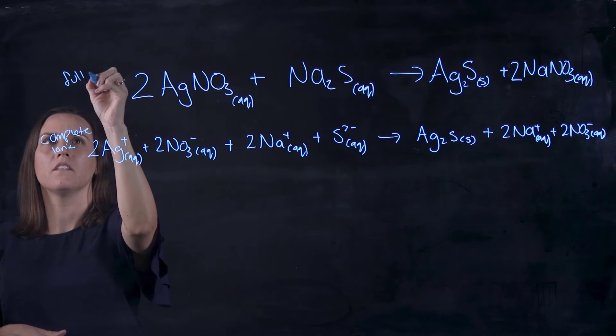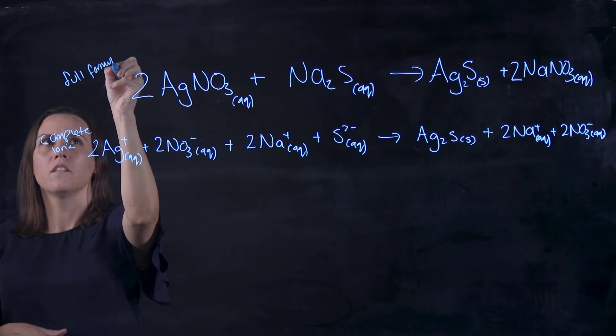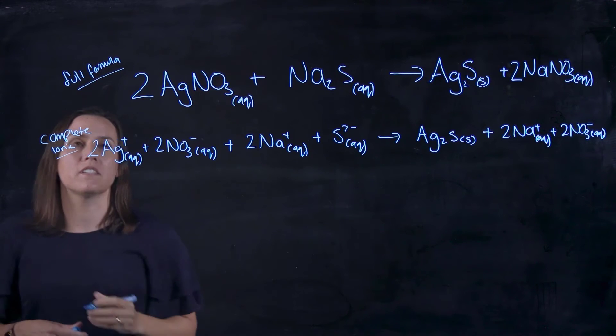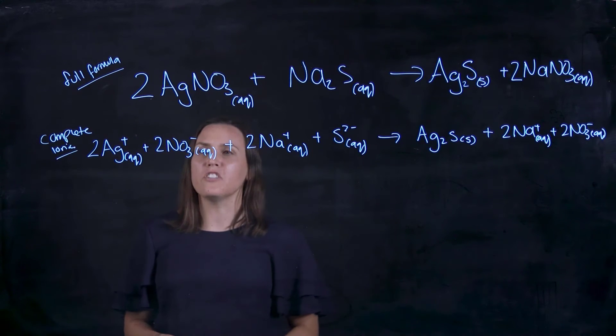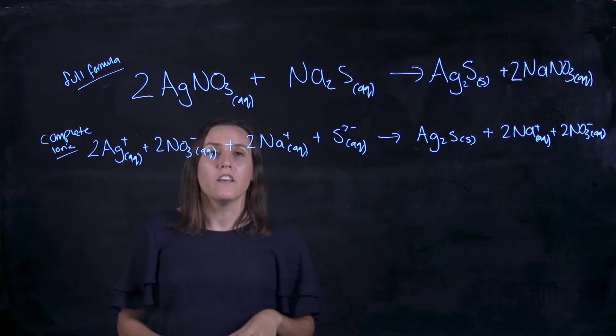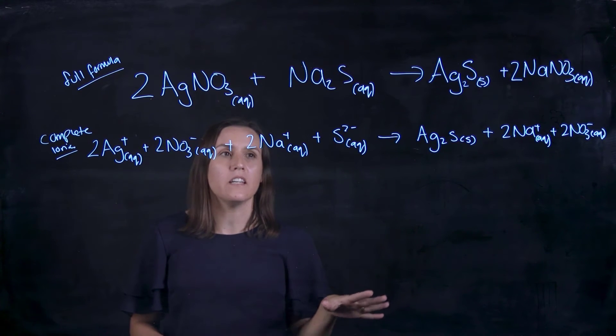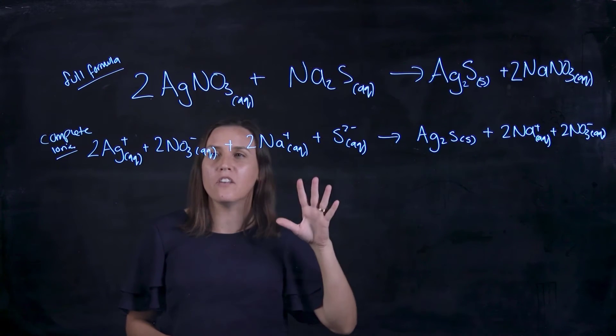This is my full formula or you might know it as the molecular. Now I'm going to show you how to write the net ionic. With this one here we want to look at our complete ionic and see what species are not changing from one side to the other.